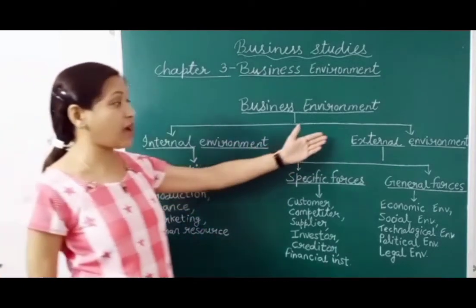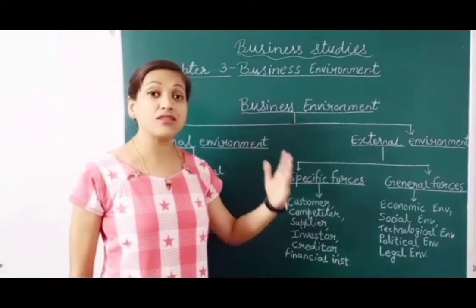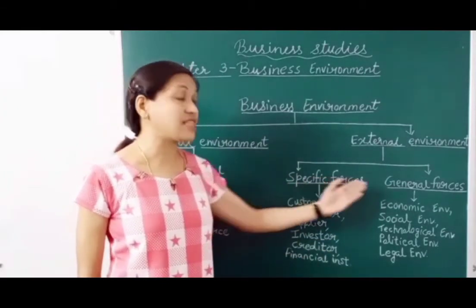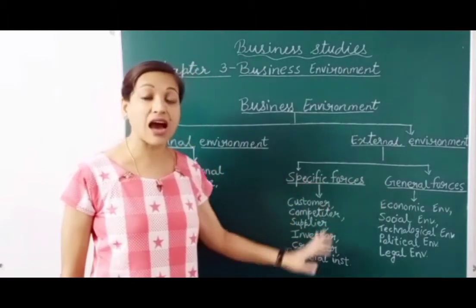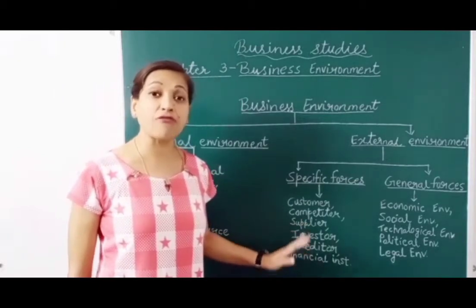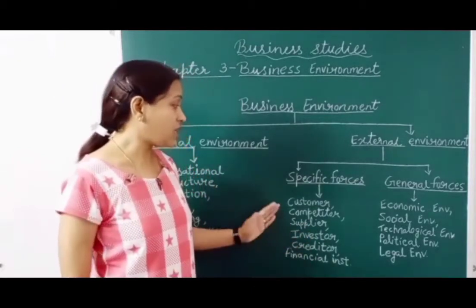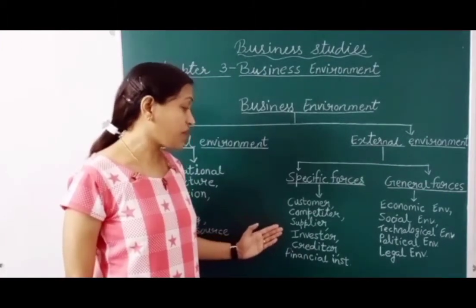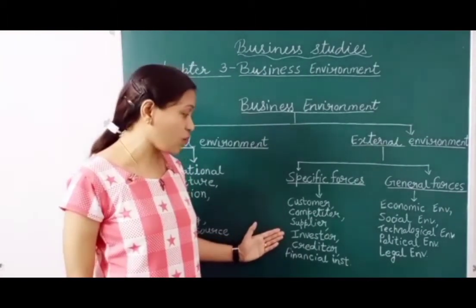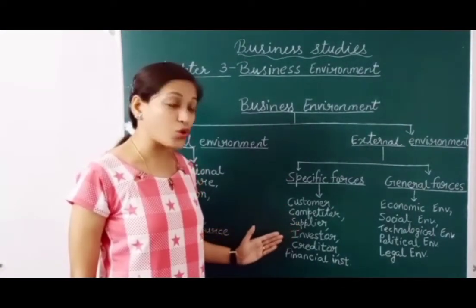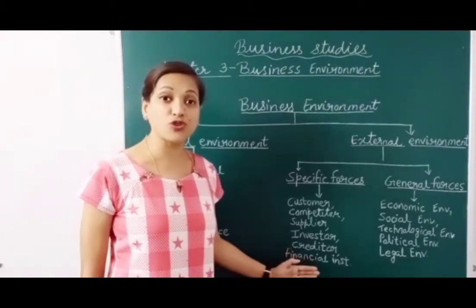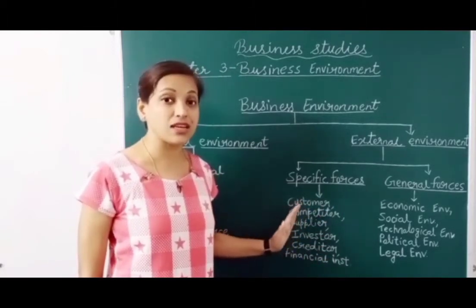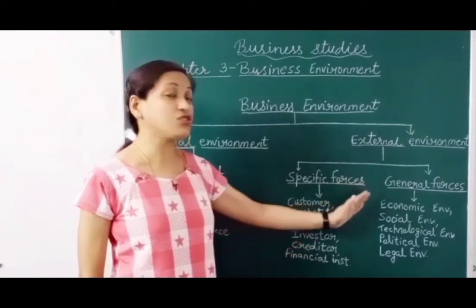The second part is external environment — the forces which are outside the business organization. It can be divided into specific forces and general forces. Specific forces are directly linked to your business and can directly affect your organization. They include your customers, competitors, suppliers of raw materials or finished goods, investors, creditors who lend money to you, and financial institutions that provide finance to you. Their policies and plans can directly affect your business positively or negatively.